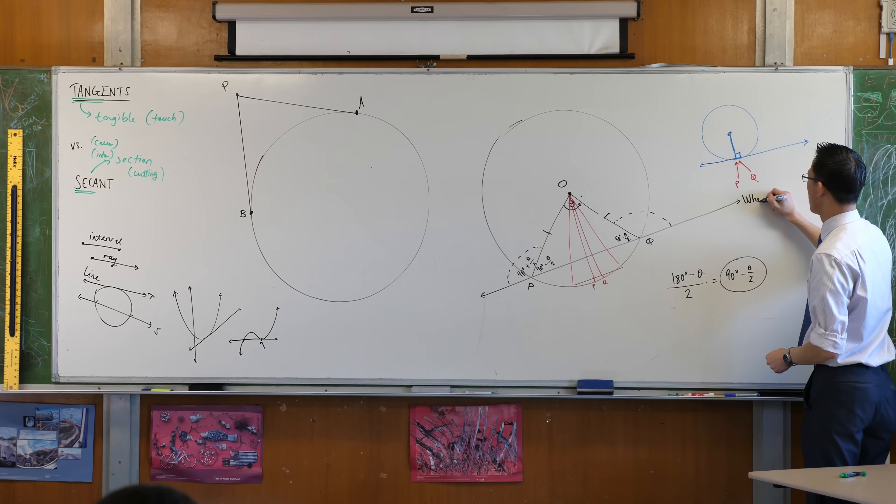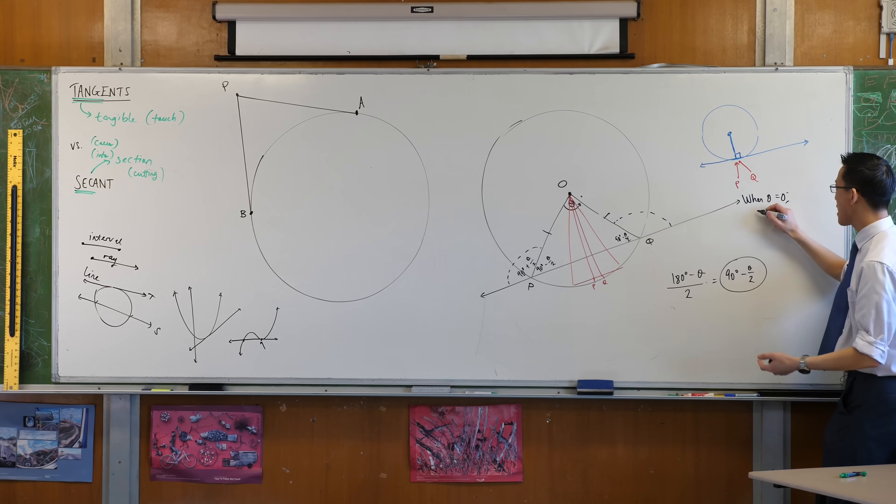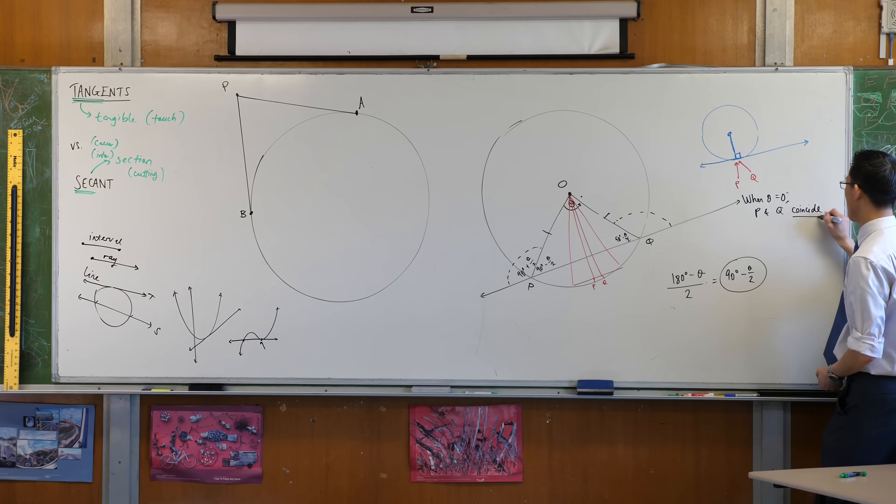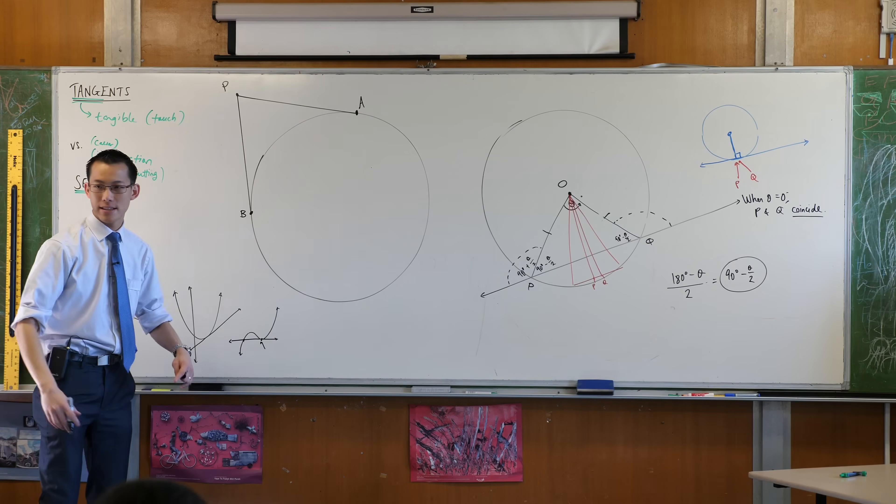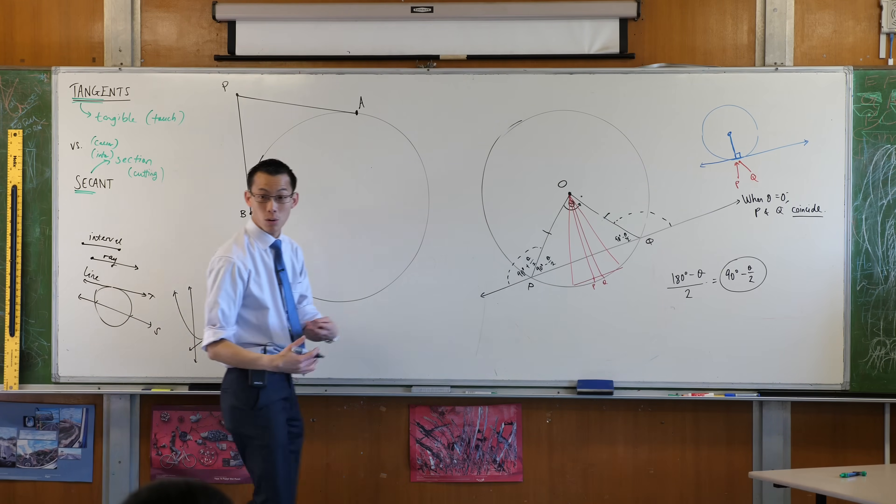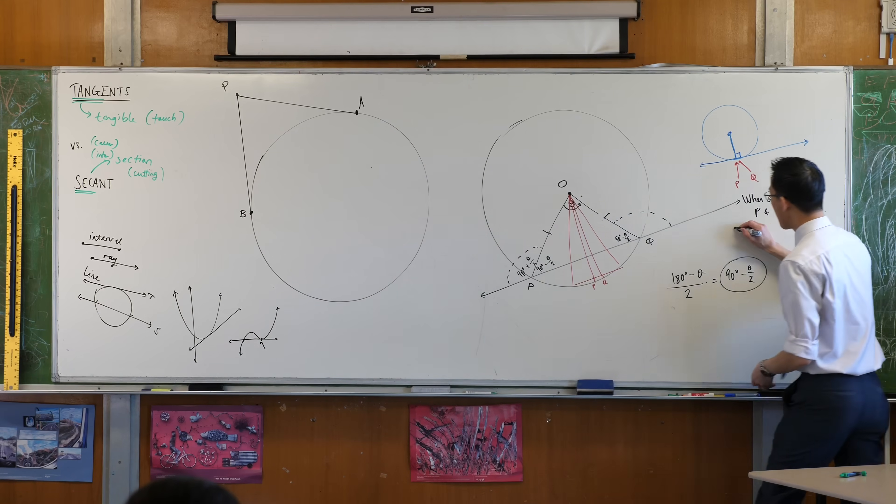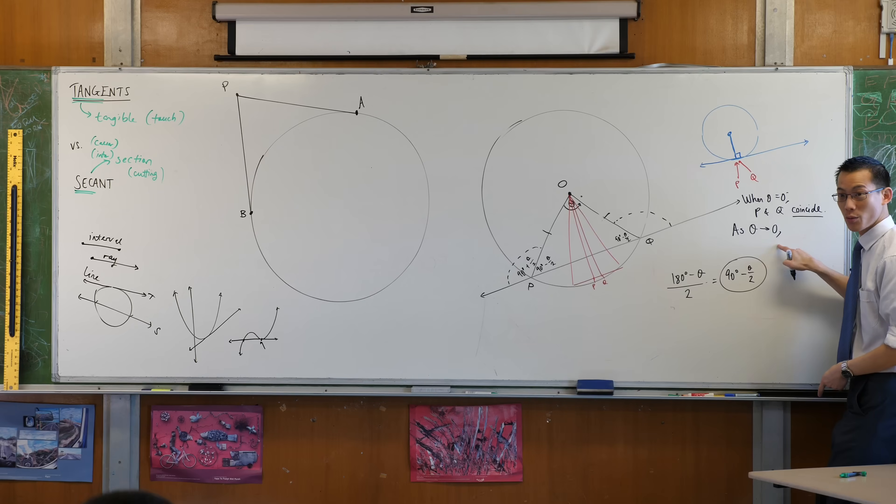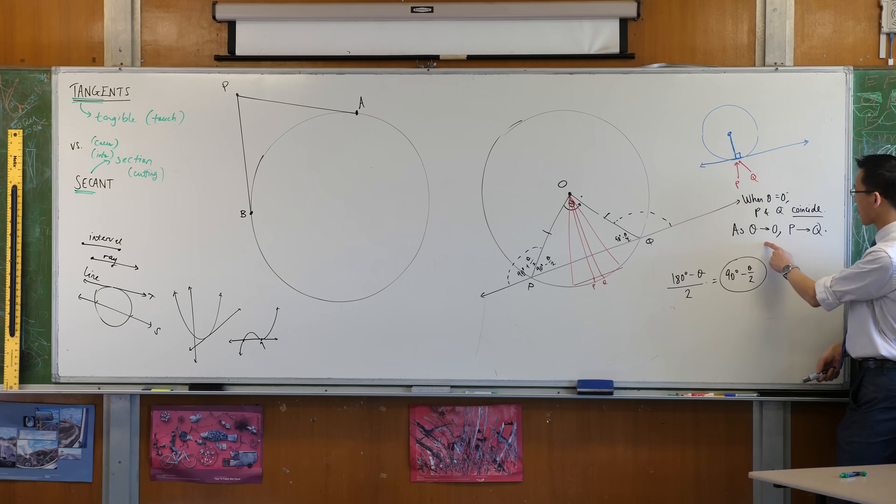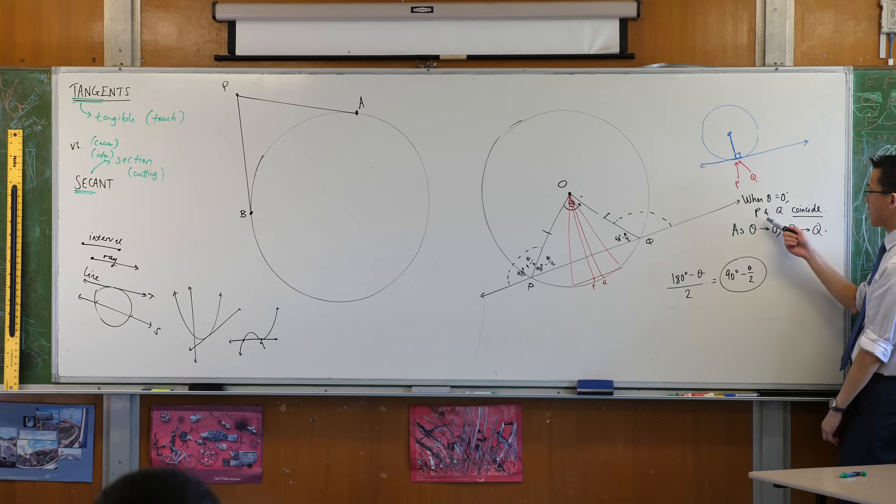When theta equals zero, P and Q coincide. They're at the same place, right? We can write this in another way. And this is language that you're again going to encounter next year, something called a limit, right? We would say as theta approaches zero, see that arrow? It means theta is going towards zero. P approaches Q. Does that make sense? Let me say it again. When theta approaches zero, P approaches Q. That makes sense. And eventually they land on top of one another.